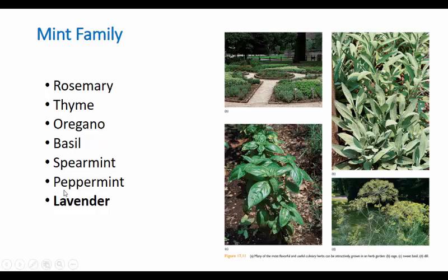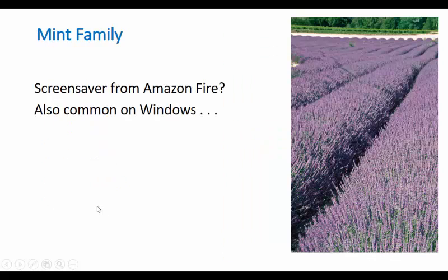The standout I want to talk about is lavender. Sage is also in this group, and here is your basil plant. Dill is also in the mint family, but you don't need to memorize that. The ones to memorize in the mint family are rosemary, thyme, oregano, basil, spearmint, peppermint, and lavender. Making a quick layout of the four herb families is probably a good idea.